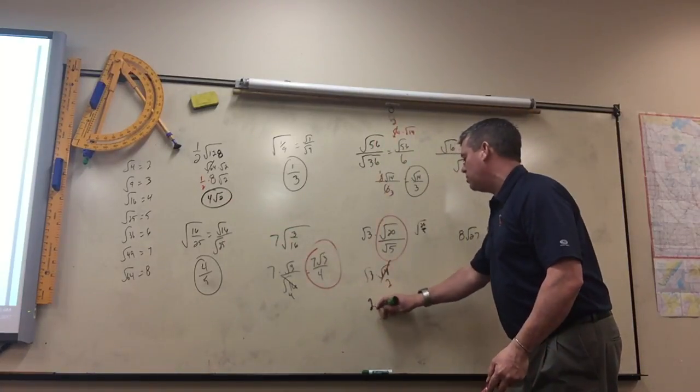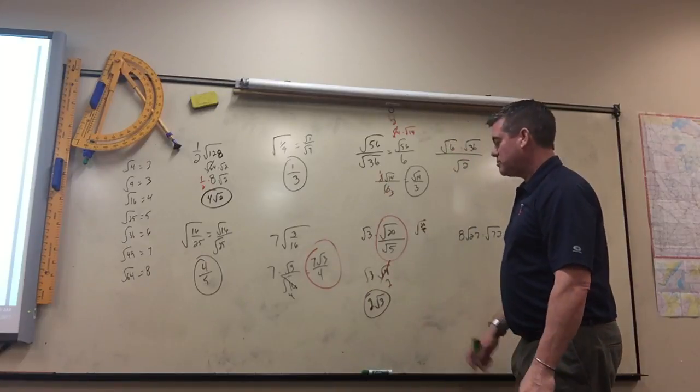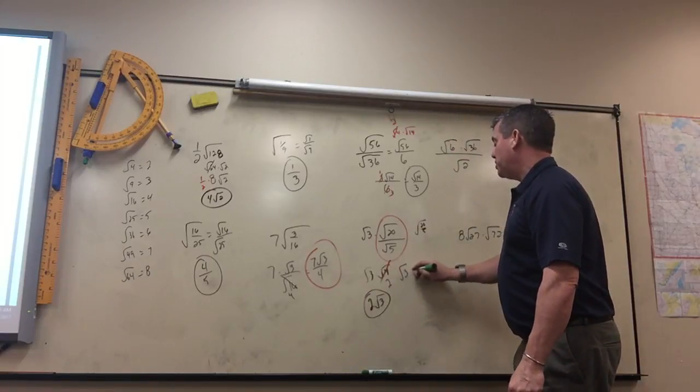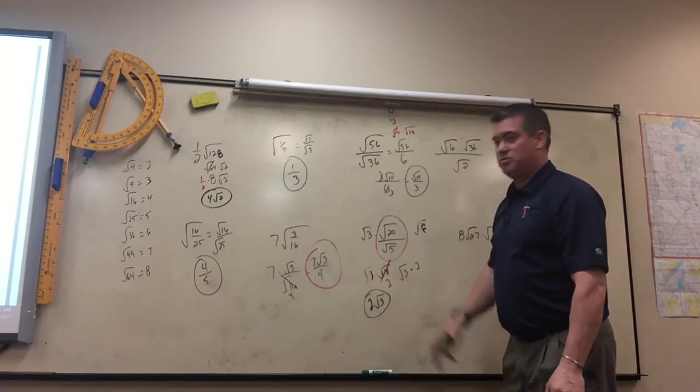So it's 3 times the square root of 2, and we typically put the number in front. It's not wrong if you don't. It's just easier to write and easier to say.